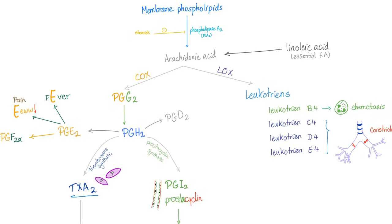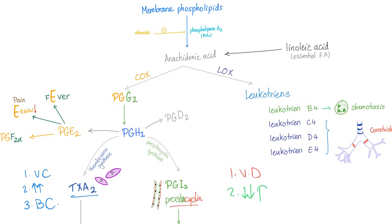Thromboxane A2 has three functions: number one, it's a vasoconstrictor; number two, it increases platelet aggregation; number three, it's a bronchoconstrictor. Prostacyclin keeps the blood cycling — it's a vasodilator and it decreases platelet aggregation.